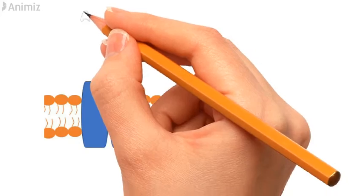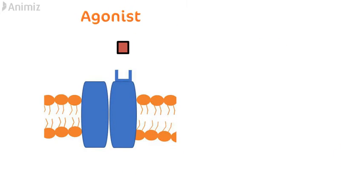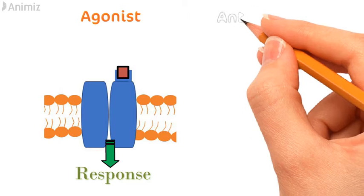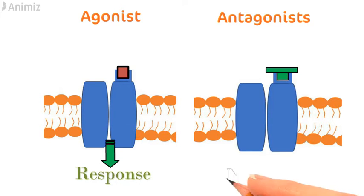Based on these terms, there are agonists which have both affinity and intrinsic activity, so when these molecules bind to the receptor they produce a pharmacological response. And there are antagonists which have affinity but no intrinsic activity, so when these molecules bind to the receptor, they do not produce any response.